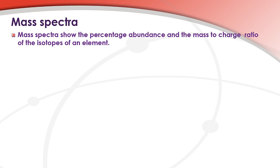Mass spectra. Mass spectra show the percentage abundance and the mass to charge ratio of the isotopes of an element. Mass spectra are produced by a mass spectrometer.